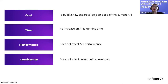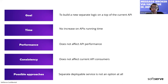The new approach should be consistently working so it doesn't affect current API consumers. We should introduce new contracts between our clients and servers. One possible approach was to create a microservice architecture, but that was prohibited from the very beginning — any separate deployable service was not an option at all.